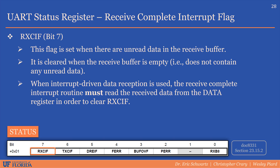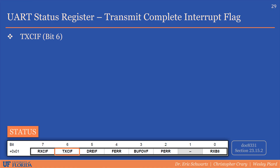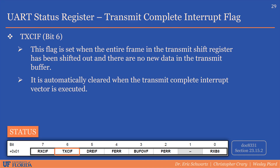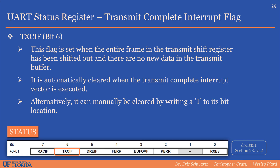When interrupt-driven data reception is used, the receive complete interrupt routine must read the received data from the data register in order to clear the receive interrupt flag. If the receive complete interrupt is used, there's no need to manually poll the receive complete interrupt flag, which means the program does not need to be halted doing any sort of polling. The transmit complete interrupt flag is set when two conditions are met: the entire frame in the transmit shift register has been shifted out, and there are no new data in the transmit buffer. It is automatically cleared when the transmit complete interrupt vector is executed, or it can be manually cleared by writing a 1 to its bit location in the status register.